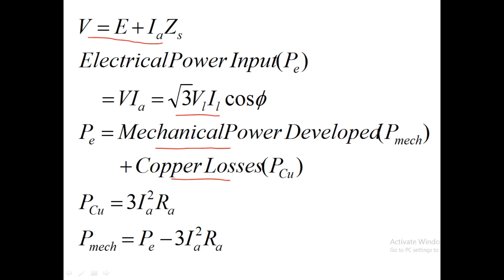The output power can be termed as mechanical power developed because in a motor there is no electrical power output — the output is mechanical work. Whatever power is converted to mechanical work or torque, that power is known as mechanical power.